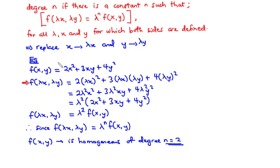Note that this shortcut only works for polynomial functions. For trigonometric, logarithmic, or exponential functions, substitute λx for x and λy for y to check whether f(λx, λy) = λⁿ · f(x,y). If you obtain this expression, the function is homogeneous and n gives the degree. Let's now try a few more examples.